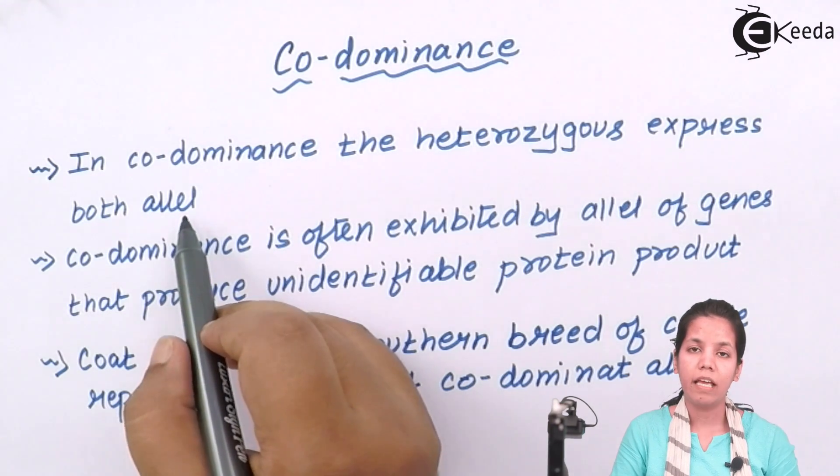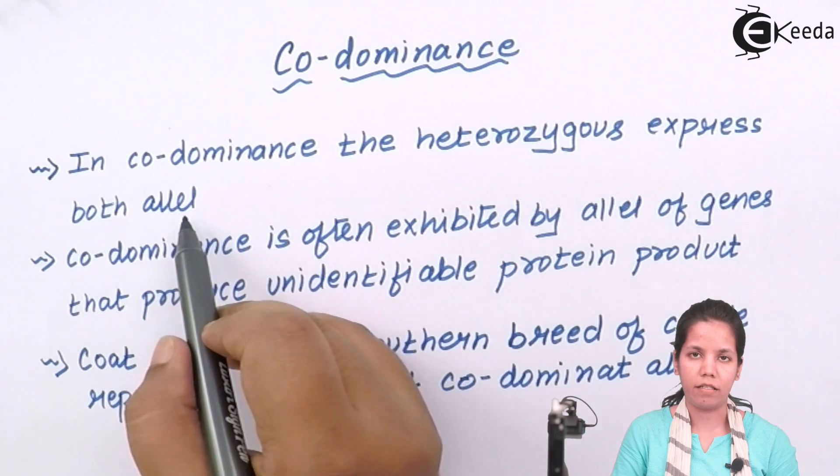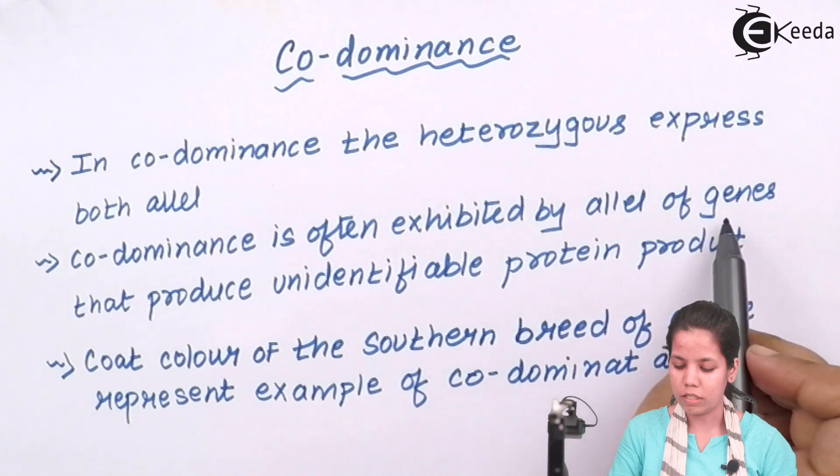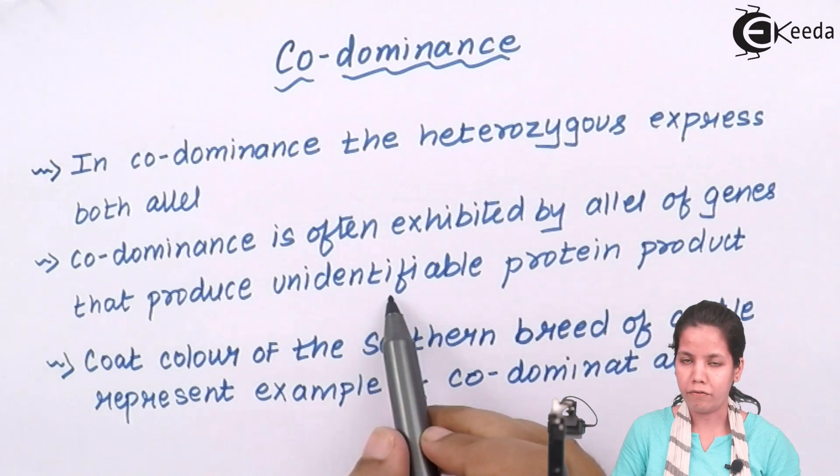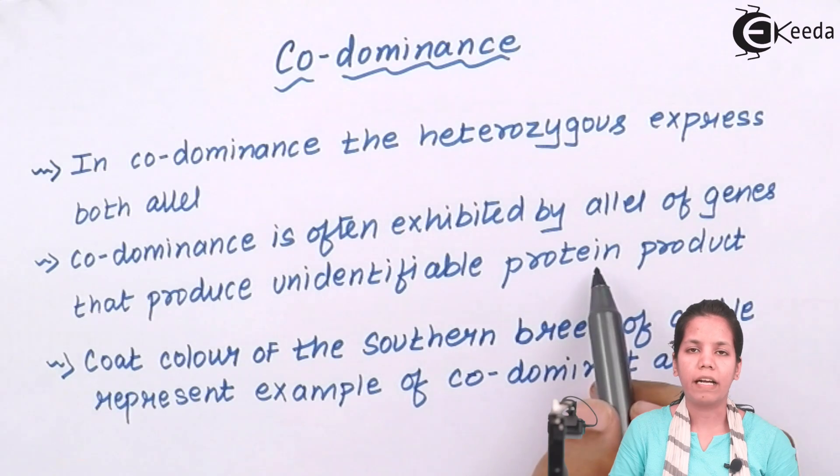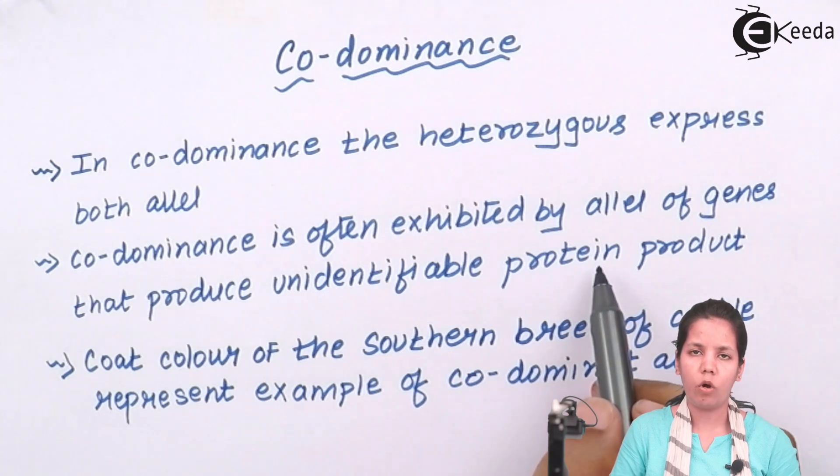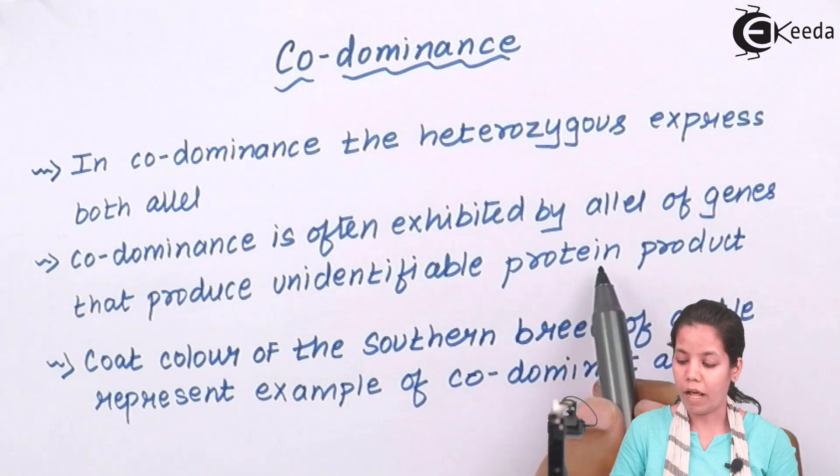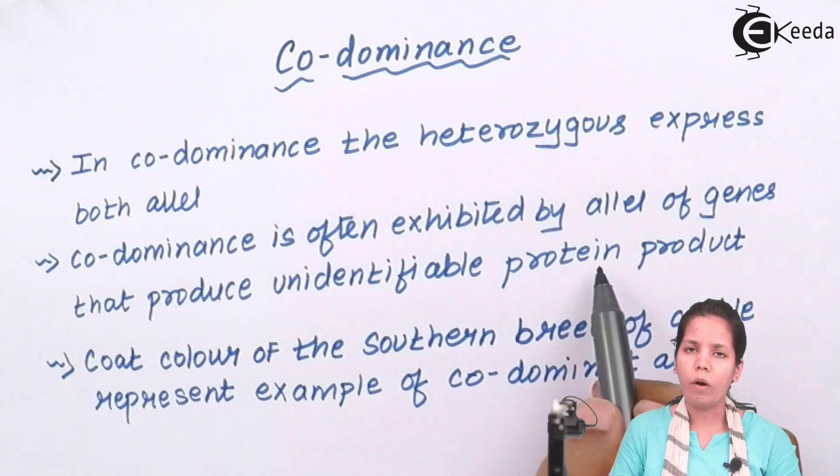When I say express, it means they would show both of its characteristics. Codominance is often exhibited by alleles of genes that produce unidentifiable protein products. Whenever codominance is seen in any pea plant or flower or animal, both alleles are expressed and try to show their characteristics. When they show their characteristics, proteins are produced and these proteins could mix with each other or one protein would try and dominate another protein.